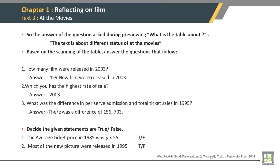How many films were released in 2003? Answer: 459 new films were released in 2003.